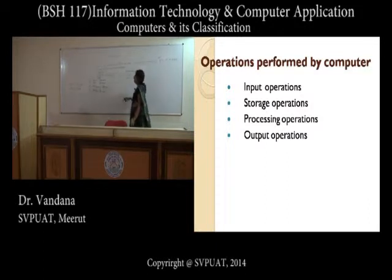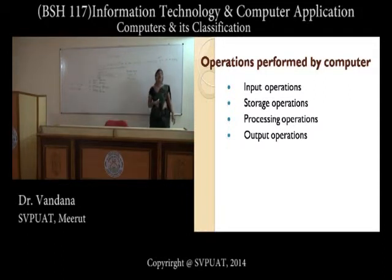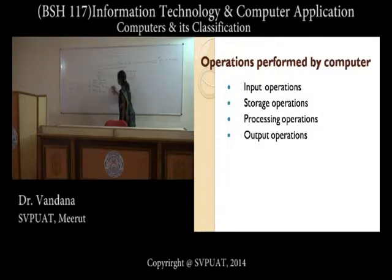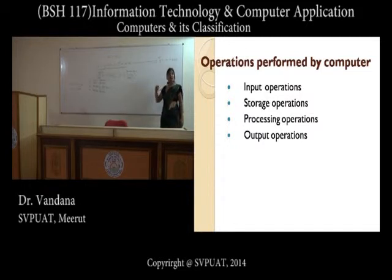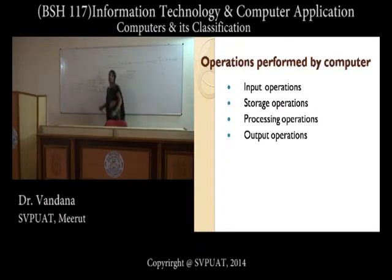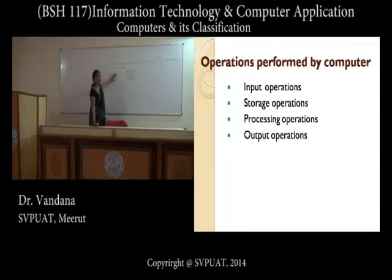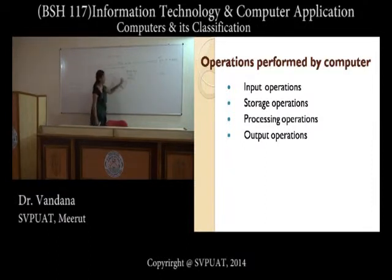By processing operations, I mean all those operations which act upon the data so that the user's desired output can be generated. For example, if there are two values A and B and the operation is addition, the computer generates signals and executes the addition. After processing, the desired output is handed over to an output device such as a monitor or printer.